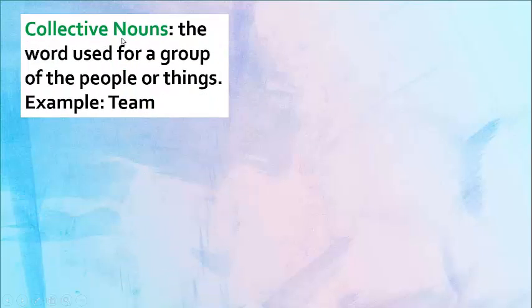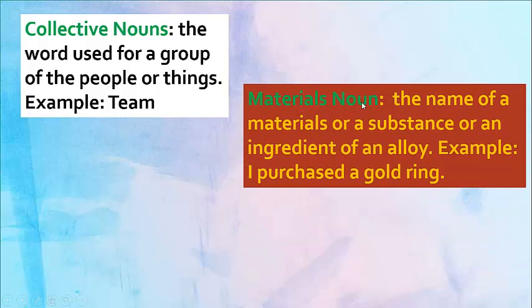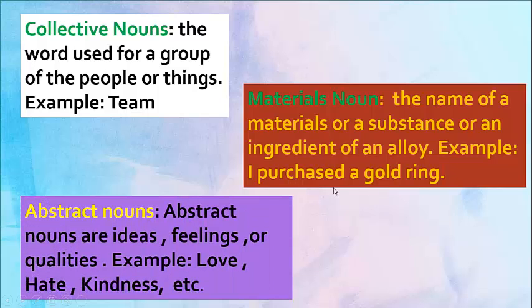Collective nouns: the word used for a group of people or things. Example: team. Material noun: the name of a material or a substance or an ingredient of an alloy. Example: I purchased a gold ring.